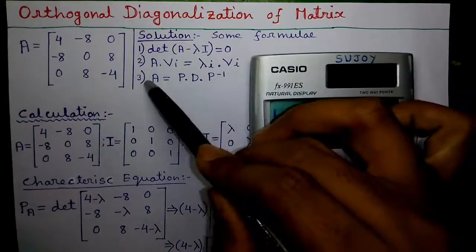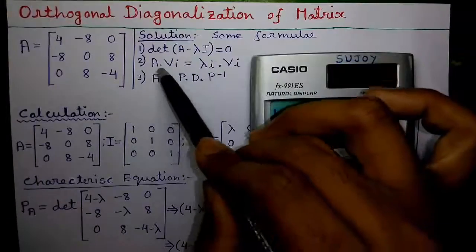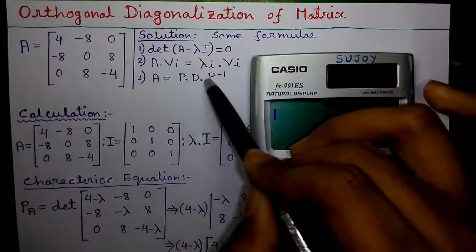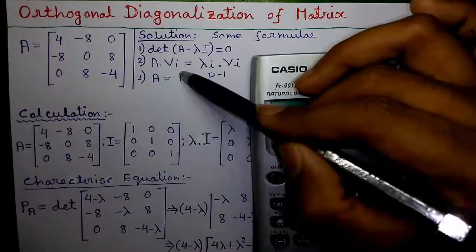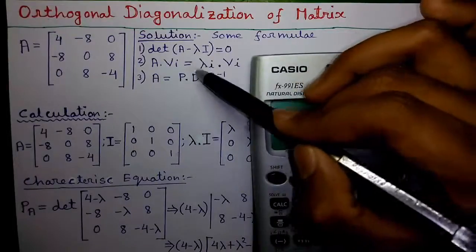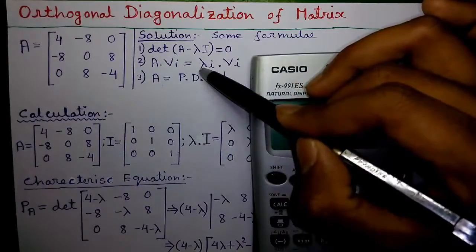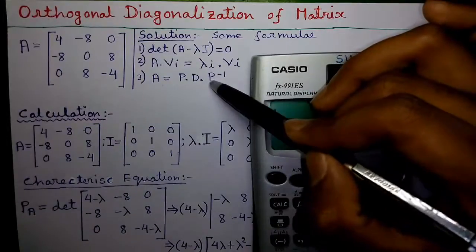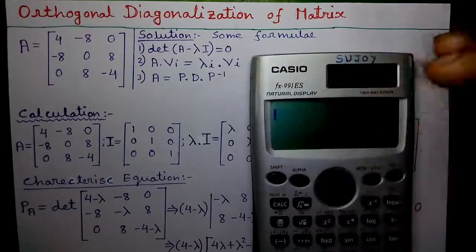First, I will prove the formula number 3, which is A equals to P into D into P inverse. Where P is the diagonalized matrix, D is the eigenvalue matrix and again P is the diagonalized matrix.